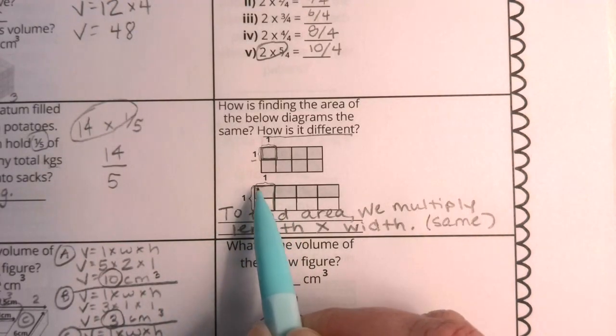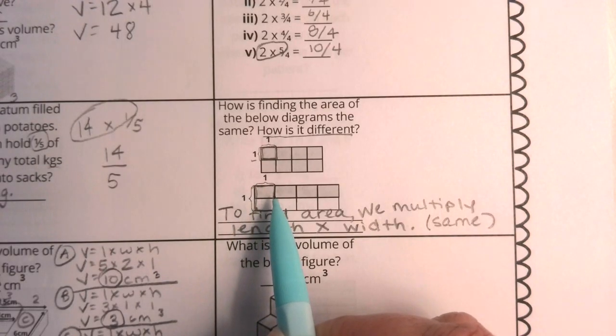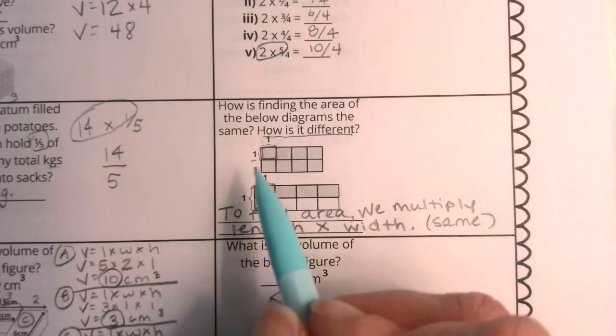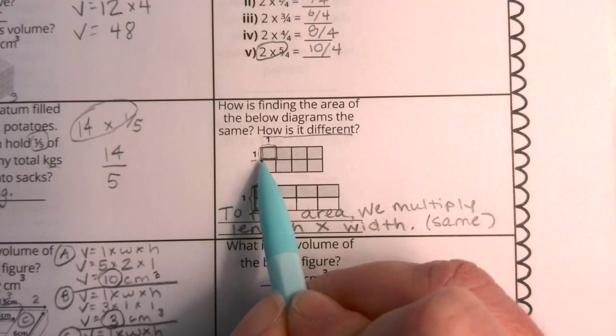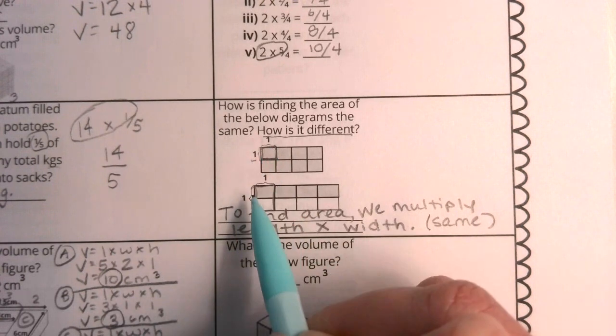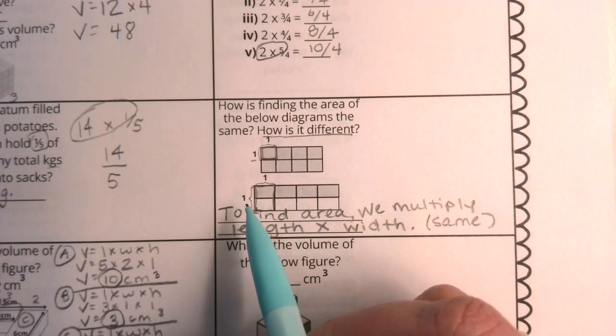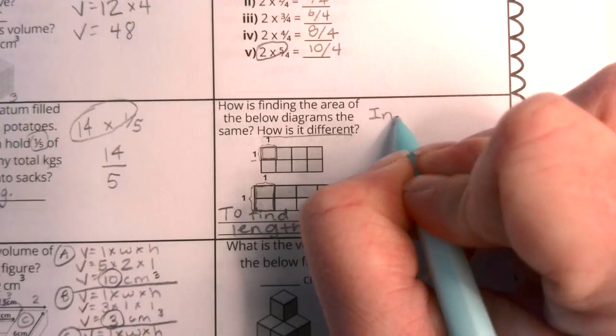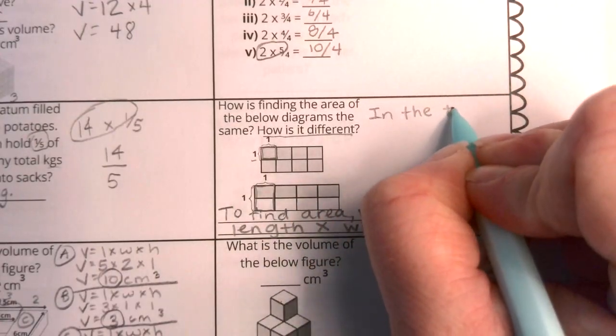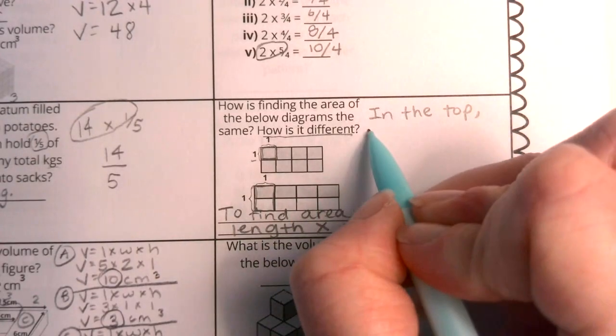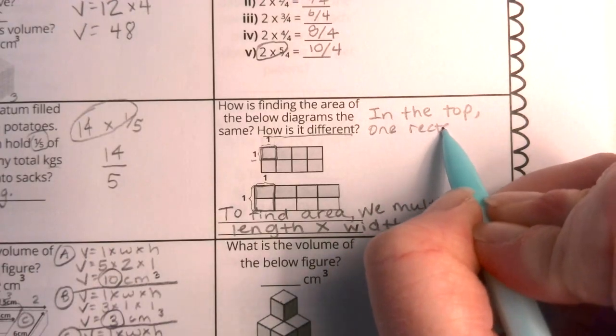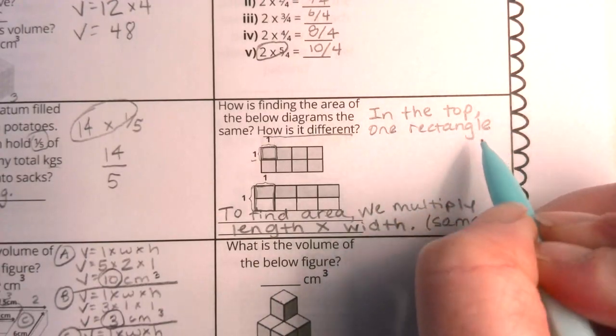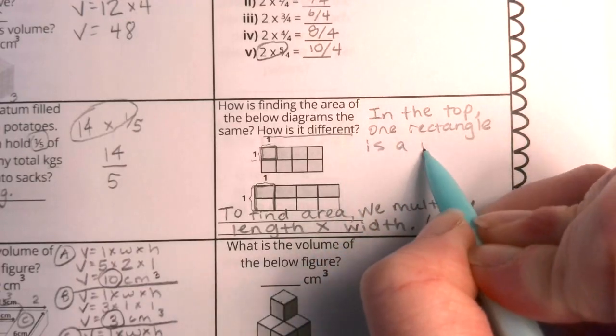So instead of looking at this as a whole, this is actually a half. Do you see that? The way that the whole is set here, one whole is one rectangle. Here, one rectangle is one half. So that is how they're different. How they're different is when you look at them, you see that in the top, and you can write this with me, one rectangle, it's not really a square, it's really more of a rectangle and one rectangle is a whole.